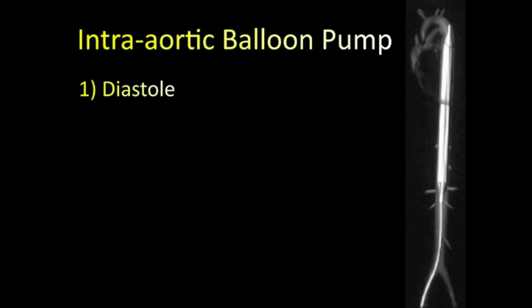Here we have an image of a balloon pump properly positioned in the descending aorta. This is a polyethylene balloon mounted on a catheter, and the tip comes close to the left subclavian artery — within about two centimeters of it.